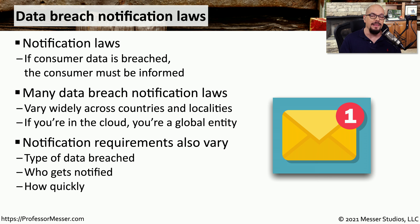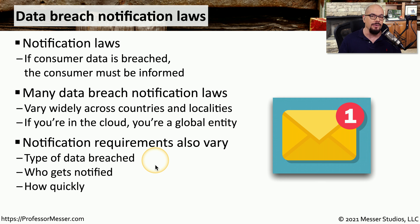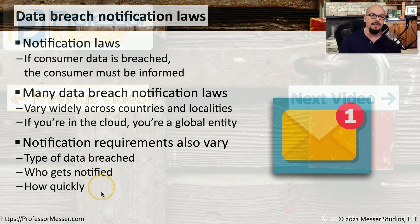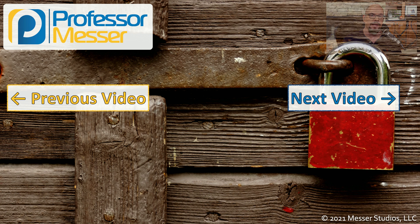You might also find that notification requirements vary depending on geography. There might be rules and regulations regarding the type of data that is breached and what type of notification should be made. For example, is a breach of someone's name or email different than a breach of their name, email address, and telephone number? It's also important to know who needs to be notified if a breach occurs and how quickly you would need to notify them after a breach has been identified.